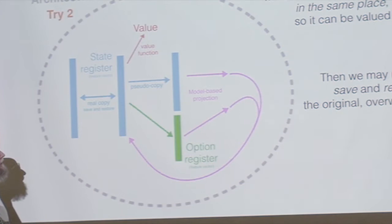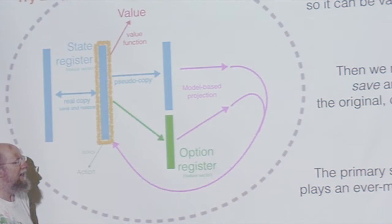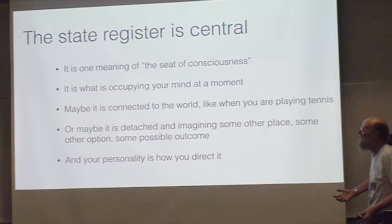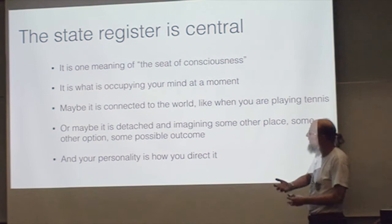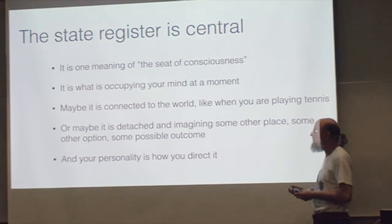Really important here is the agent state. It's the primary thing. You temporarily make a copy, you overwrite it with new. It's like the center of everything. Very briefly, the state register is central. You could say it's like the seat of consciousness. It is what is occupying your mind at the moment. This is the state you're thinking about. Maybe it's directly connected to the world, like when you're playing tennis or doing something really interactive. But then sometimes you sit back and you think and it could be more detached.